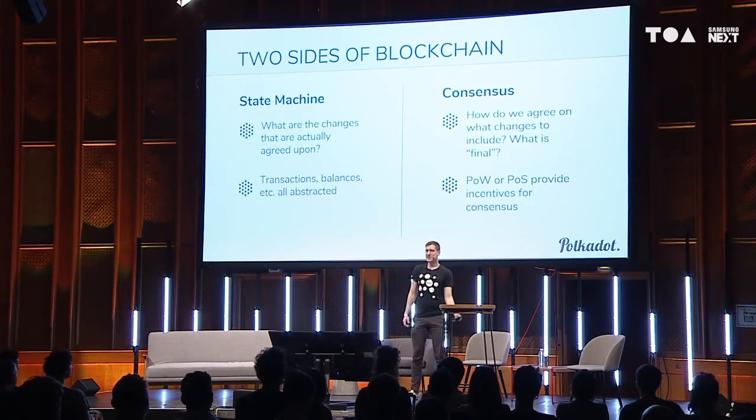So the two sides of blockchain. There are basically two key components that go into constructing a blockchain. The first is the state machine, and this is what you're usually interested in when you hear about a blockchain project. What are the changes that are actually agreed upon? Whether it's transactions, what kind of data is stored, whether it's using an account model or something with unspent transaction outputs like Bitcoin — the state machine abstraction encapsulates all those possible blockchain state machines that could exist.